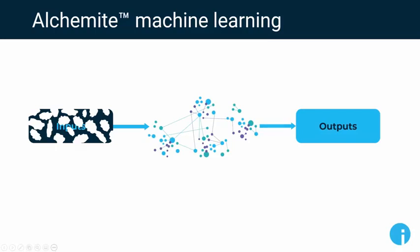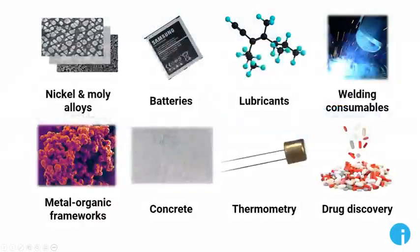This is particularly relevant for experimental data. Alchemite was originally developed to design a new nickel superalloy in collaboration with Rolls-Royce for their jet engine turbine blades, and has since been applied to a whole variety of different applications — different superalloys for materials design, alkane lubricants, and drug discovery, which is obviously what we're here to talk about today.